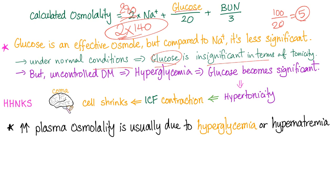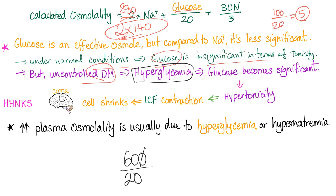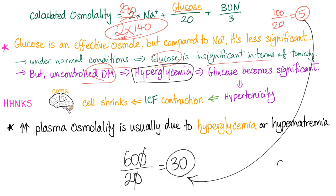But in uncontrolled diabetes with hyperglycemia, glucose can reach 600 — so 600 over 20 is 30. That's significant. And sometimes in uncontrolled diabetes, serum glucose can be in the 900s, so in cases of uncontrolled diabetes, glucose can indeed be a big deal.